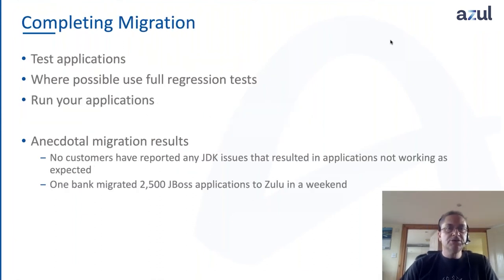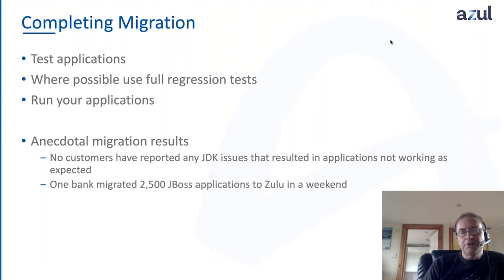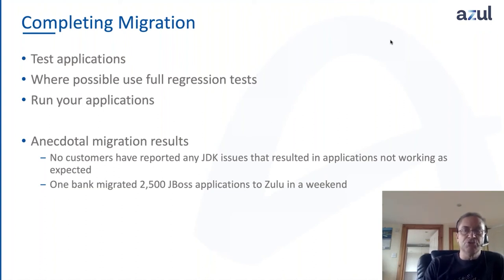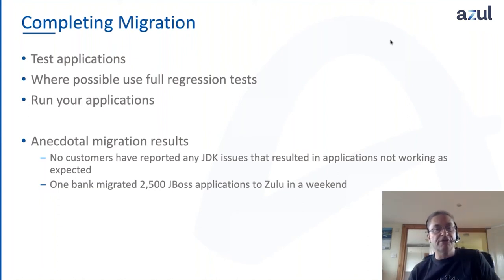The third phase — completing the migration — is really just about testing. There really shouldn't be any problems. Hand on heart, no customers that we've had, and there are literally hundreds of customers who've made the migration from Oracle to Azul, have ever reported an issue as a result of different functionality or different behavior in the Zulu JDK compared to Oracle. We've had people as big as Salesforce make the migration and run all their applications with no problems. We have one bank in Australia who migrated two and a half thousand JBoss applications from Oracle to Zulu in a weekend — because nothing changed, they just ran the applications, ran the tests, it was all good, and they haven't looked back since.